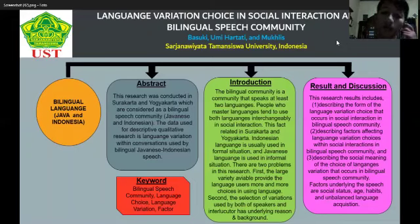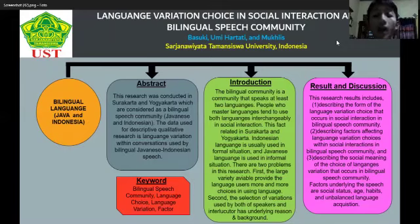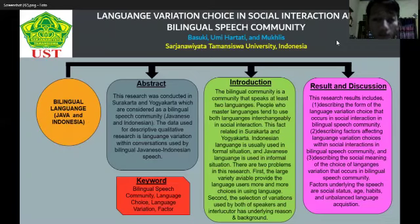In the introduction part: a bilingual community is a community that speaks at least two languages. Bilingual people are those who have mastered two languages — in this case, Javanese and Indonesian. People who have mastered both languages tend to use them interchangeably in social interaction. In Surakarta and Yogyakarta, Indonesian is usually used in formal situations and Javanese is used in informal situations.